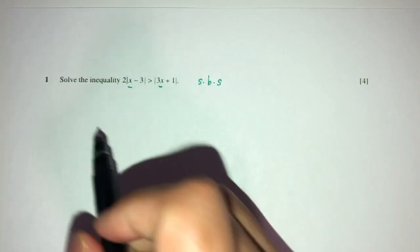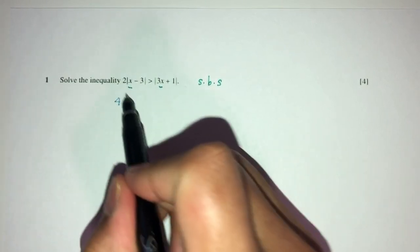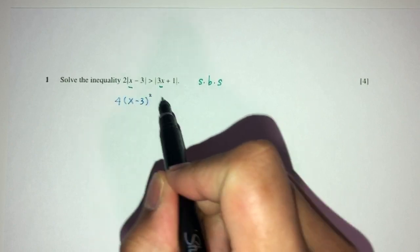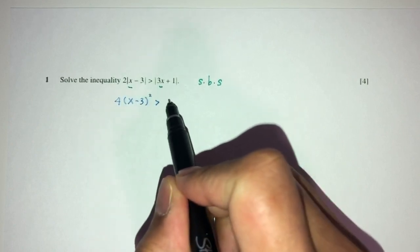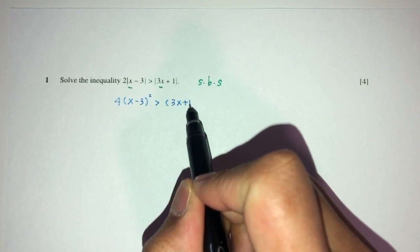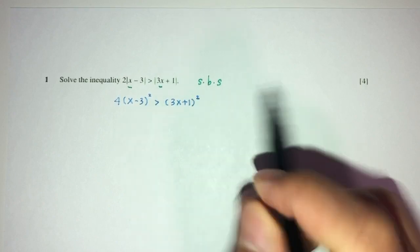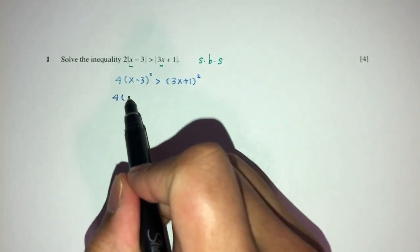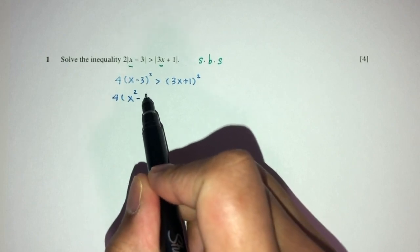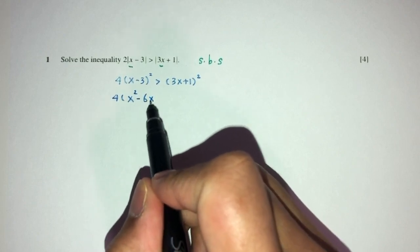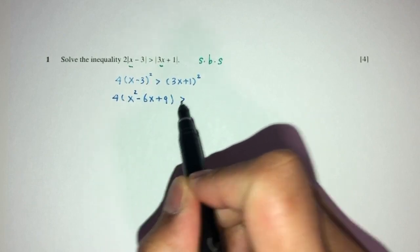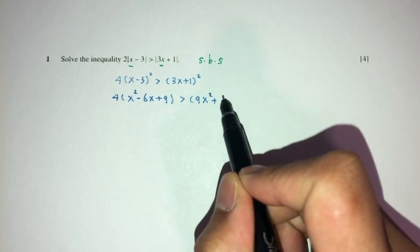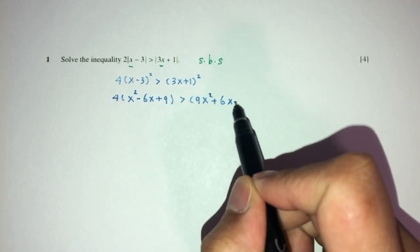So in this case, squaring gives us 4 times (x minus 3) squared, greater than (3x plus 1) squared. Simplifying: 4 times (x squared minus 6x plus 9) is greater than 9x squared plus 6x plus 1.